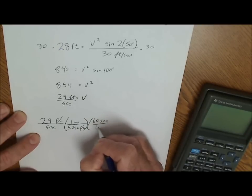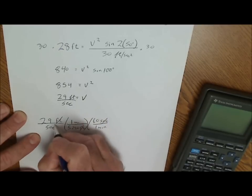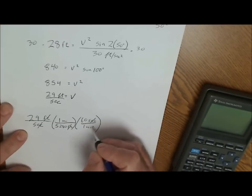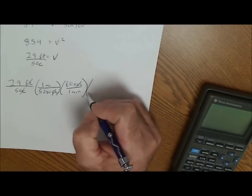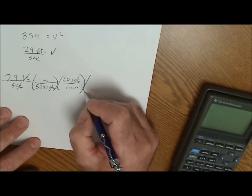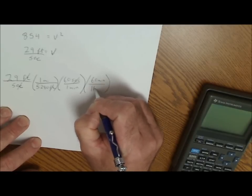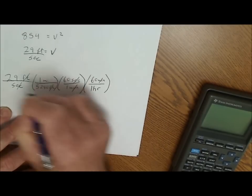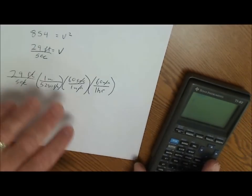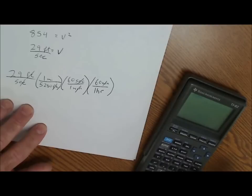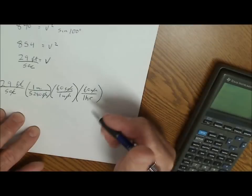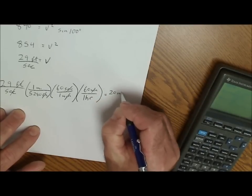60 seconds is one minute. Seconds cancel. Now I have miles per minute. Multiplying by factors are one, so I never change the value. I'm just changing the units. 60 minutes equals one hour. Minutes cancel. The only units I have in the numerator is miles. Only units in the denominator is hours. So I take that 29, multiply by 60, by 60 again. Then I'm going to divide that by 5280. I'm going to end up with about 20 miles per hour.